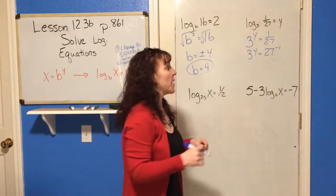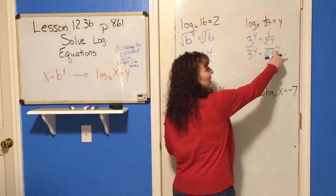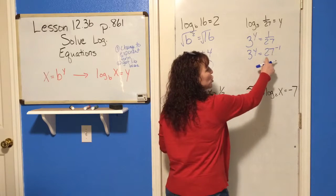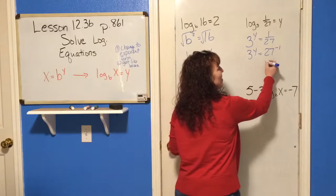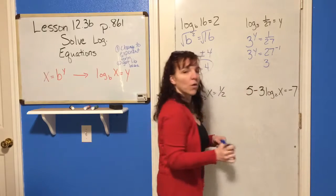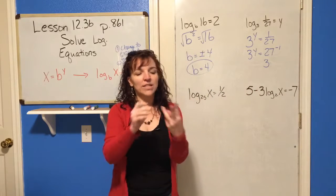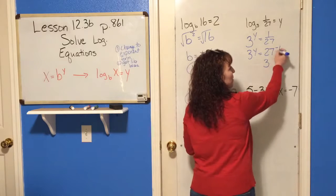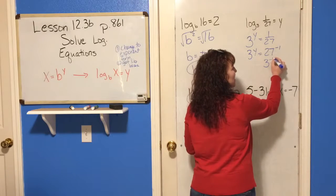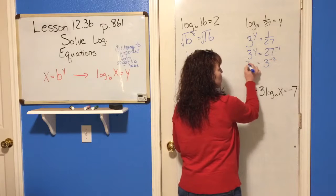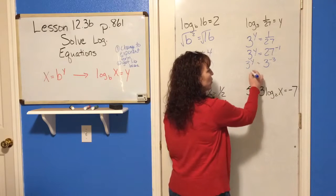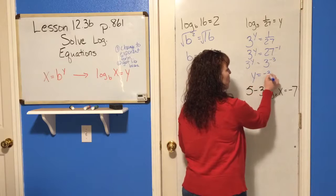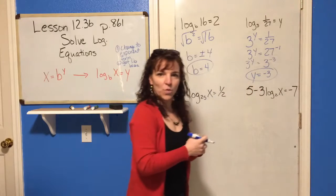We're going to bump it up into the numerator by giving it a negative power. And you know that 27 is 3 to what power? 3 times 3 is 9, and 9 times 3 is 27. So, 3 to the 3rd power, and because this is a negative 1, it's 3 to the negative 3 power equals 3y. So, now you know y equals negative 3, and you're done. That one was quite simple.